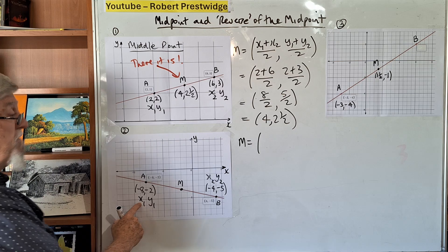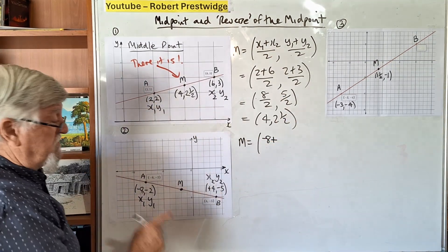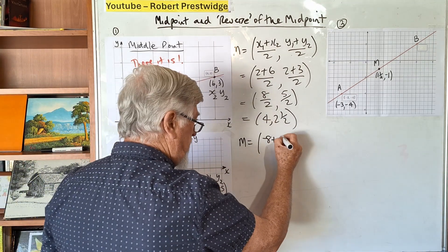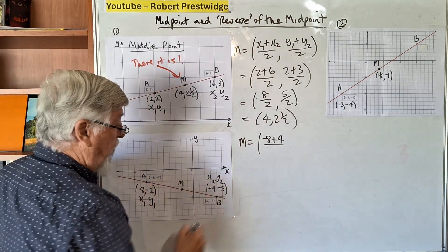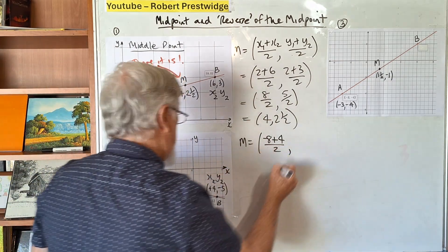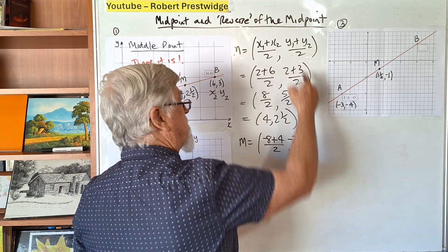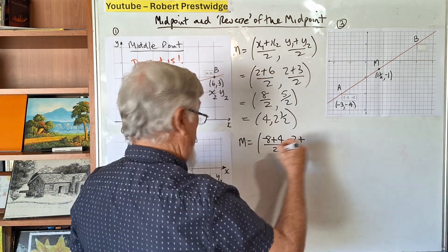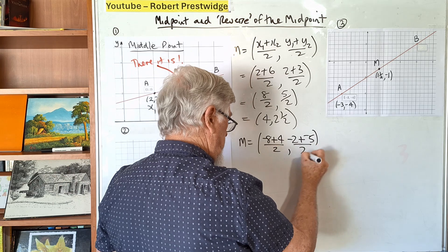The first x value is -8 plus the second x value is 4, divided by 2. The first y value is -2 plus -5, divided by 2. So that goes -5 there and divide it by 2.